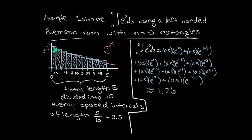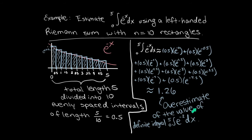As you can see, the blue rectangles are slightly above the function we were interested in, so our answer here is an overestimate of the value of the definite integral. Notice that when we're doing a left-handed Riemann sum, all of the left-handed endpoints of the intervals get used — here that was 0, 0.5, 1, and then we got to the last interval where the final left endpoint was 4.5. Notice that in a left-handed Riemann sum, the final endpoint of 5 never gets used — we had no term that was e to the minus 5 power.